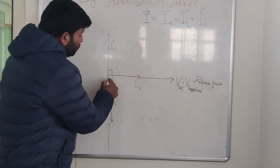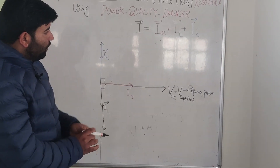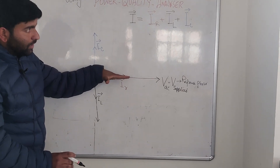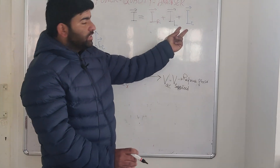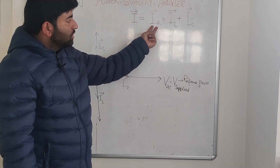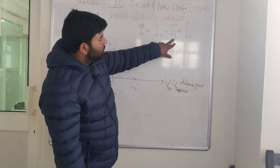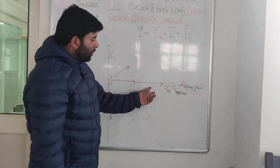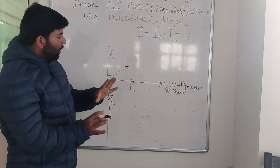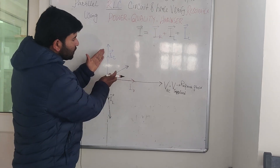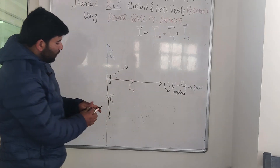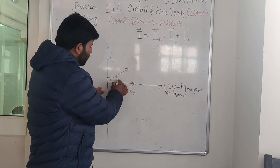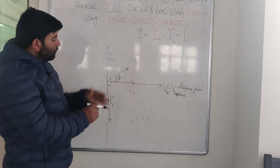The input current I, being the phasor sum of all three currents, will either lead, lag, or be in phase with the supply voltage — that in-phase condition is resonance. This depends on the values of L and C, since resistance is kept fixed. If capacitance is dominating, the current phasor will lead the supply voltage by some angle depending on the capacitance value.